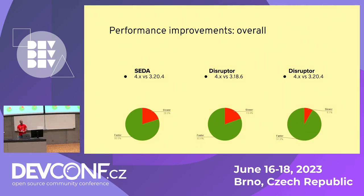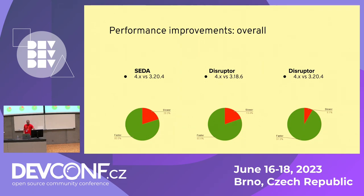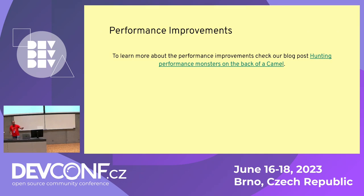Overall, what we found out is that Camel 4 in our tests was faster 80% of the times for the SEDA component when compared with Camel 3.20.4. For the Disruptor component, when compared with 3.18.6, Camel 4 was faster 80.6% of the time. And comparing with 3.20, Camel 4 was faster 91.9% of the time. If you are interested in learning more about the performance improvements in Camel 4, I suggest looking at the blog post where we discuss the changes we made, what we found out, some of the metrics we gathered, and more.